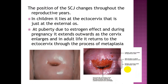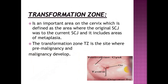The position of the squamocolumnar junction changes throughout the reproductive years. In children it lies at the ectocervix, that is just at the external os. At puberty, due to estrogen effect, and during pregnancy it extends outwards as the cervix enlarges. In adult life it remains on the ectocervix. Through the process of metaplasia, the transformation zone is defined as the area between the original squamocolumnar junction and the current squamocolumnar junction, and it includes the area of metaplasia. The transformation zone is the site where pre-malignancy and malignancy develop.